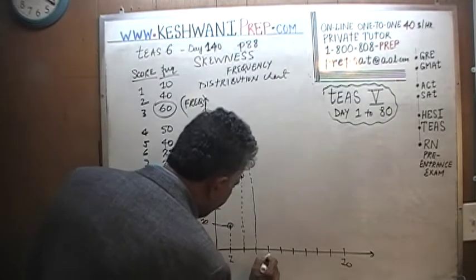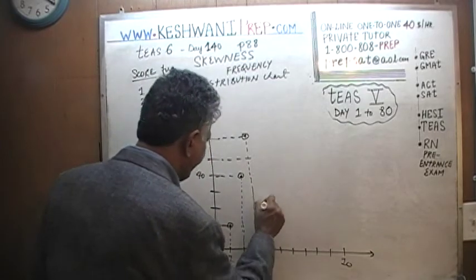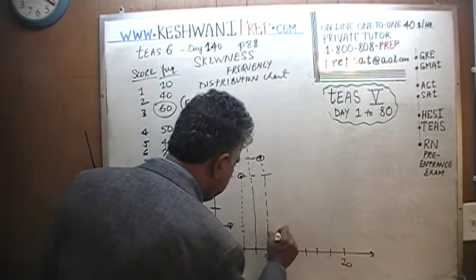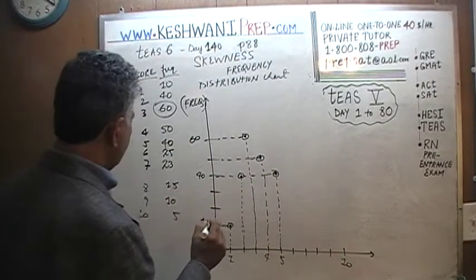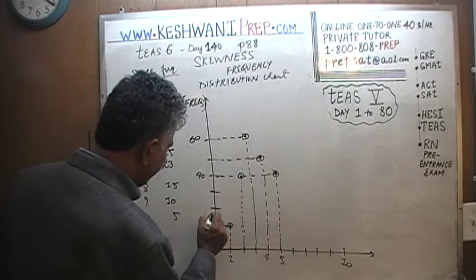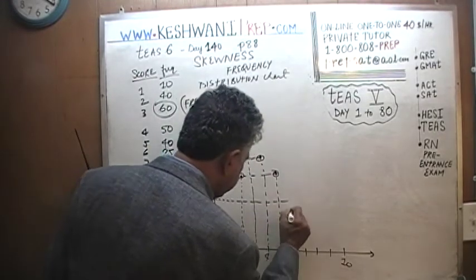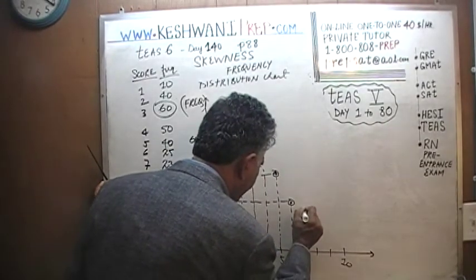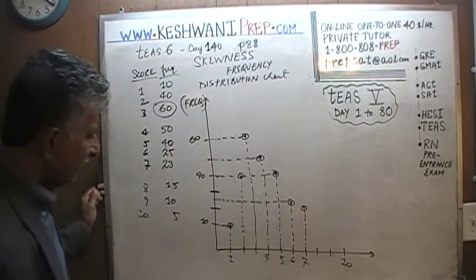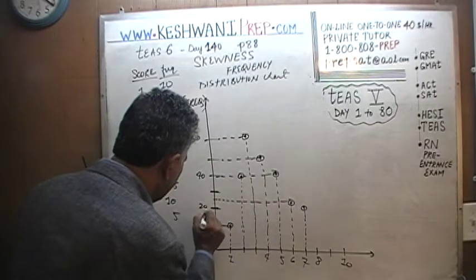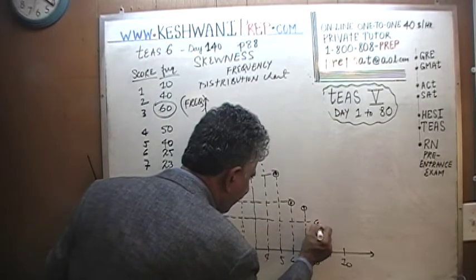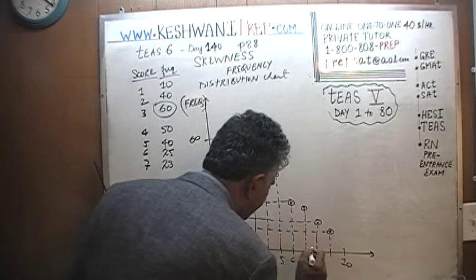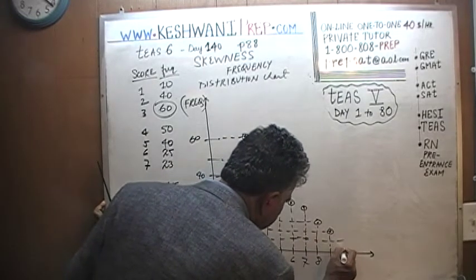50 people got a score of 4. 40 people got a score of 5. 25 people got a score of 6 — that's right between 20 and 30. 23 people got a score of 7, just below 25. 15 people got a score of 8. 10 people managed to get a score of 9. And finally, 5 people managed to get a perfect score.